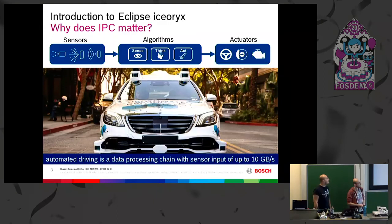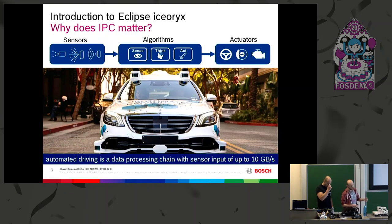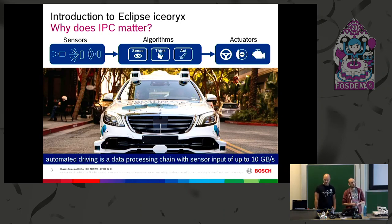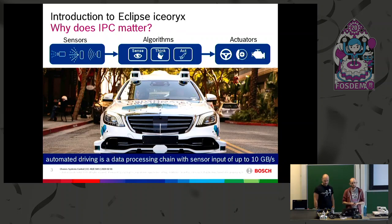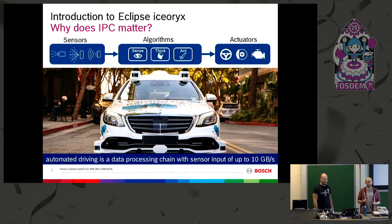Why does IPC matter? Autonomous driving is very complex. With autonomous driving you're dealing with a data-driven system. Different sensors like a lidar and a video camera are producing data and sending it to algorithms, and then further to actuators, for example a steering wheel.